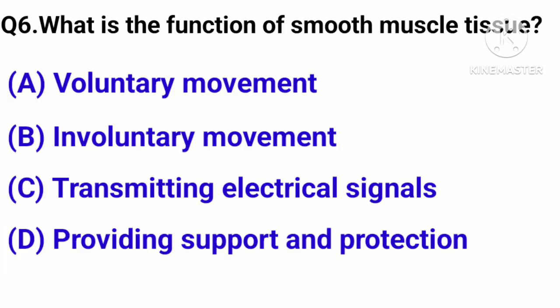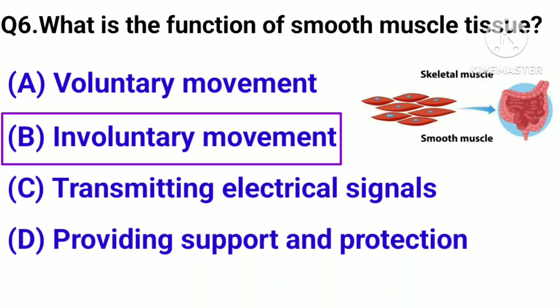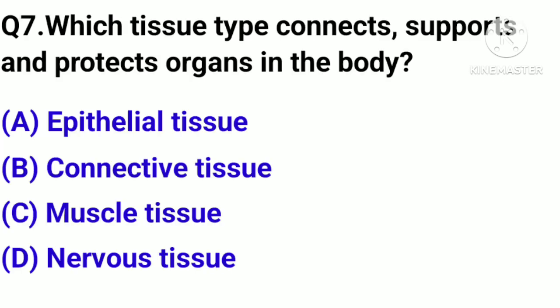Question number 6. What is the function of smooth muscle tissue? Option A: Voluntary movement. B: Involuntary movement. C: Transmitting electrical signals. D: Providing support and protection. Correct answer: Option B, Involuntary movement.